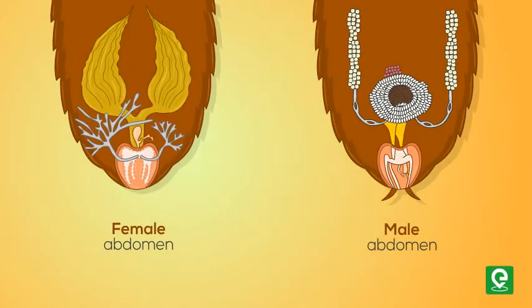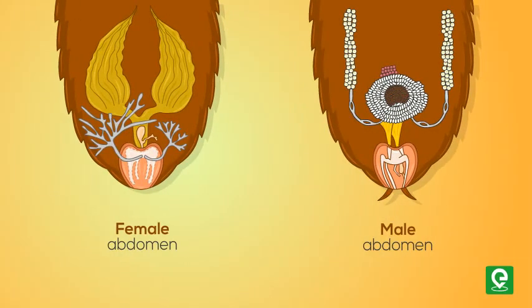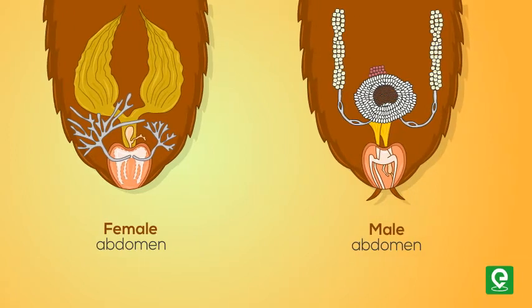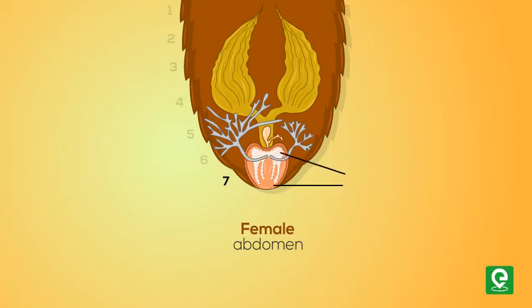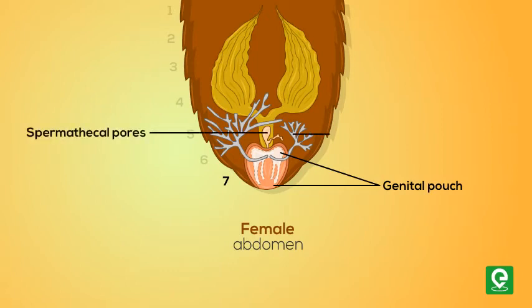The abdomen in both males and females consists of 10 segments. In females, the seventh sternum is boat-shaped and together with the eighth and ninth sterna forms a brood or genital pouch, which contains the female gonopore, spermathecal pores, and collateral glands.